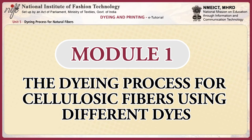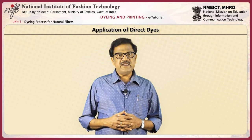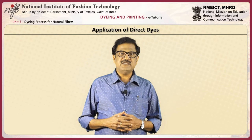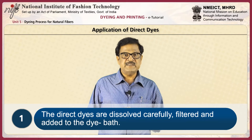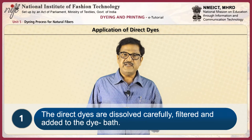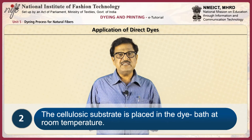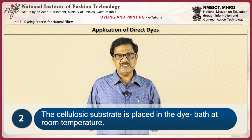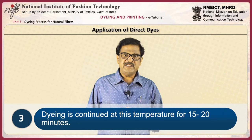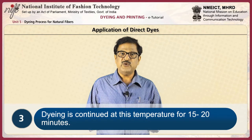The dyeing process for cellulosic fibers using various dyes. Application of direct dyes: Direct dyes are dyed using the exhaust dyeing method. The direct dyes are dissolved carefully, filtered, and then added to the dye bath. The cellulosic substrate is placed in the dye bath at room temperature and dyeing is continued at this temperature for 15 to 20 minutes.